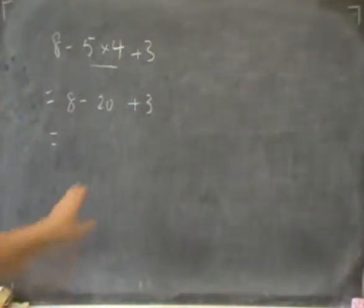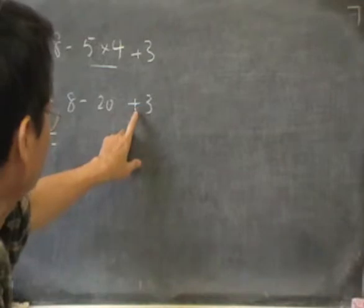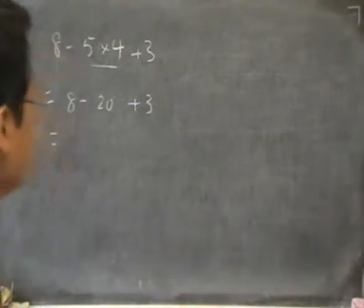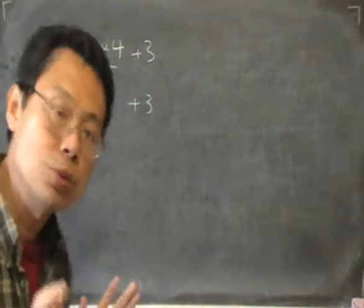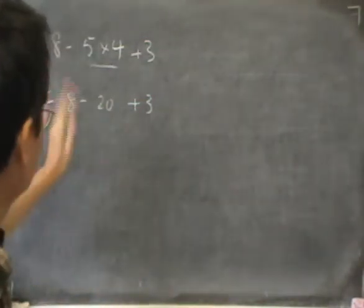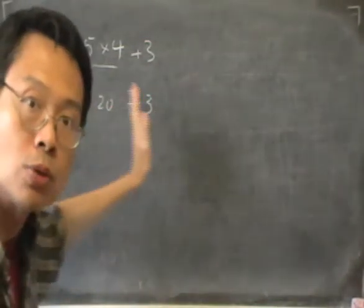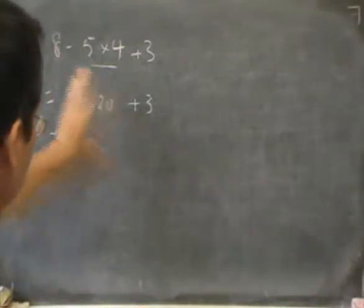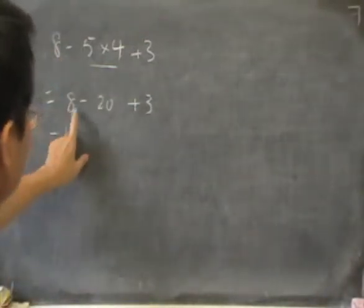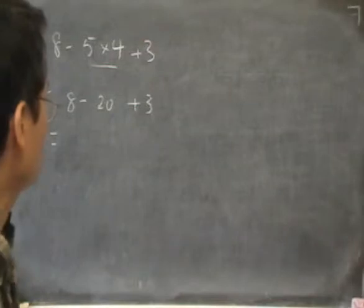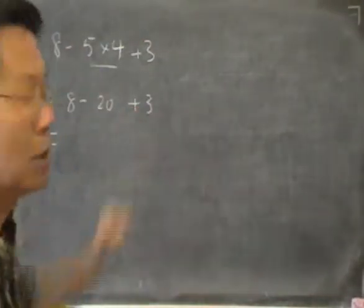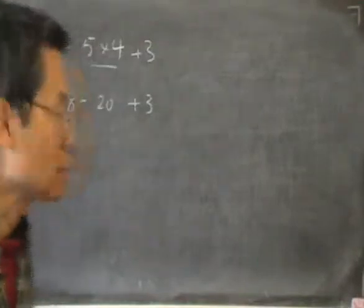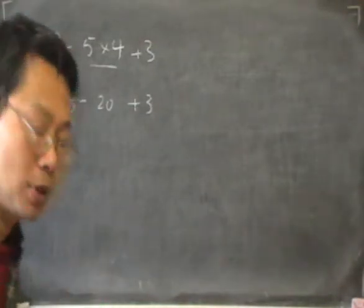So then I only have the plus and the minus. When you have just the plus and minus, you should start from the left and go to the right. So you start from the left and you do the 8 minus 20 first. You must not do the 20 plus 3 first. That will give you a different answer.